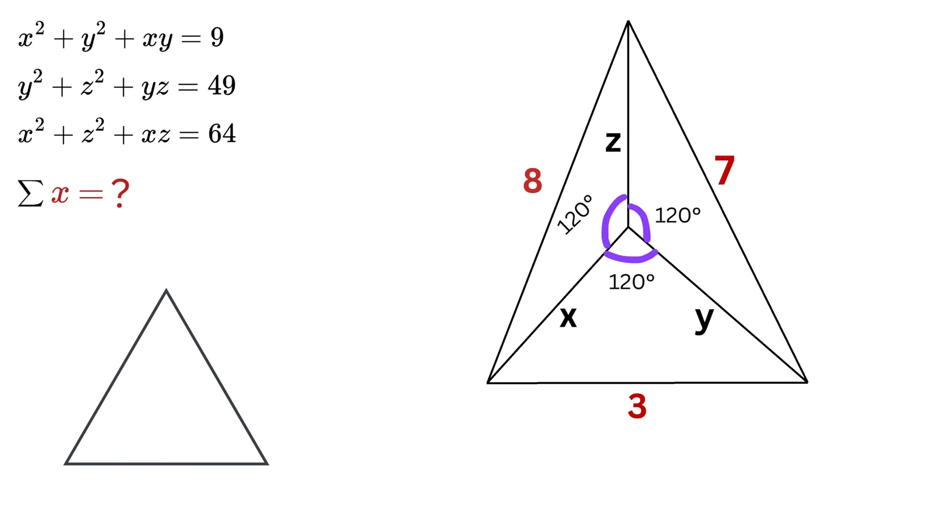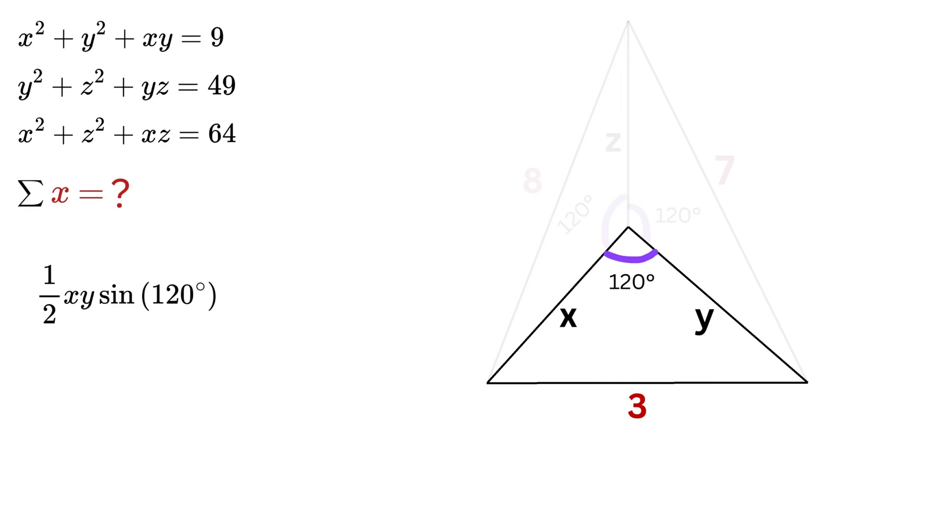Now let me tell you another secret about triangles. What will be the area of a triangle whose sides are a, b, c and the angle opposite side c is C? It will be (1/2)ab sin C. So what will be the area of this triangle? Its area will be (1/2)xy sin 120°, which is √3/2. Thus the area will be equal to (√3 xy)/4.